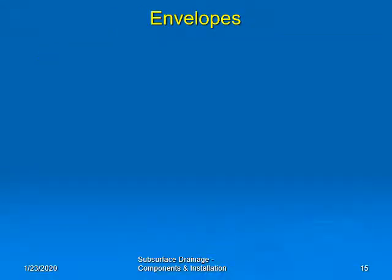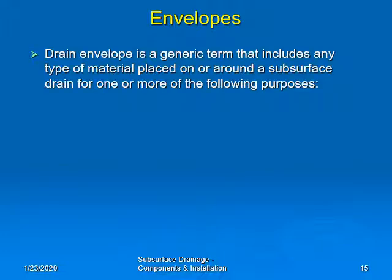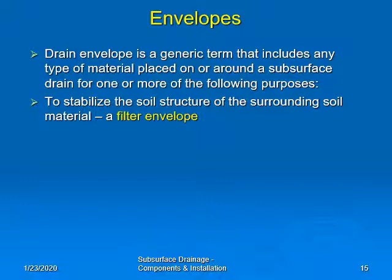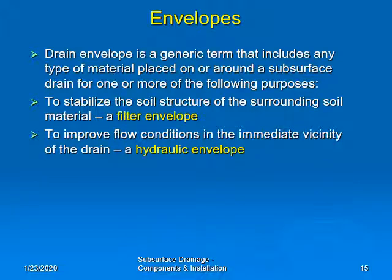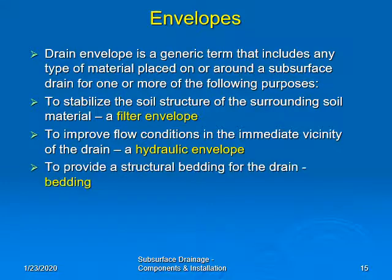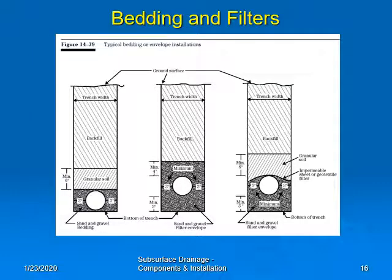Envelopes are used where drains are installed in poor site conditions or to improve flow into the drain. The drain envelope is a generic term that includes any type of material placed on or around a subsurface drain for one or more purposes: to stabilize the soil structure of the surrounding soil material — known as a filter envelope; to improve flow conditions in the immediate vicinity of the drain — a hydraulic envelope; and to provide structural bedding for the drain — known as bedding. The left drawing illustrates sand and gravel bedding used to provide support for the pipe. The center drawing illustrates a filter envelope used in unstable soil conditions, for which a site-specific filter design will be needed. The drawing on the right illustrates a hydraulic envelope, which will improve flow to the pipe from the surrounding soil.